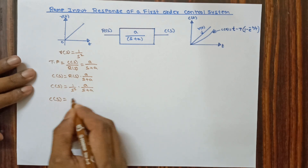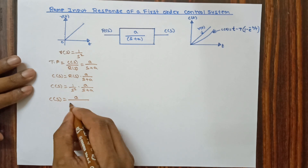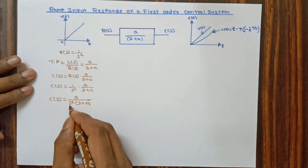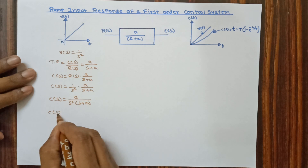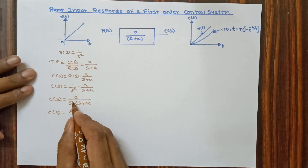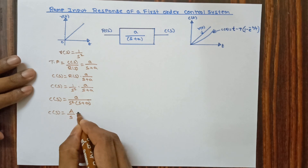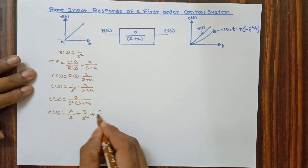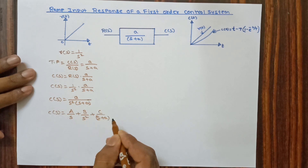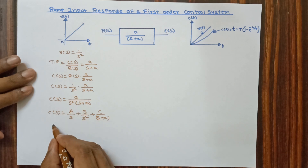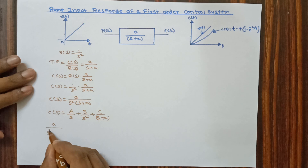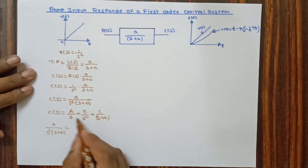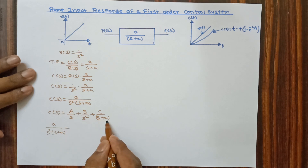This gives us C(s) = a / [s² · (s+a)]. By taking the partial fraction of this, C(s) = A/s + B/s² + C/(s+a). We know C(s) = a / [s² · (s+a)], and taking the LCM we get s² · (s+a) in the denominator.